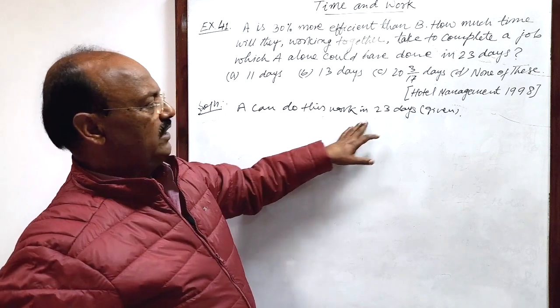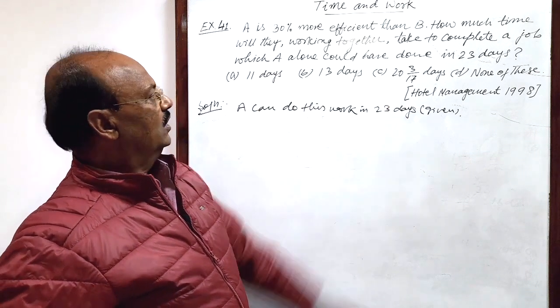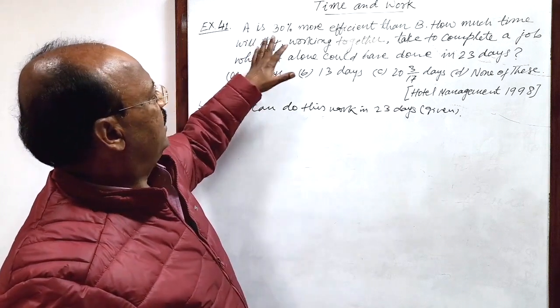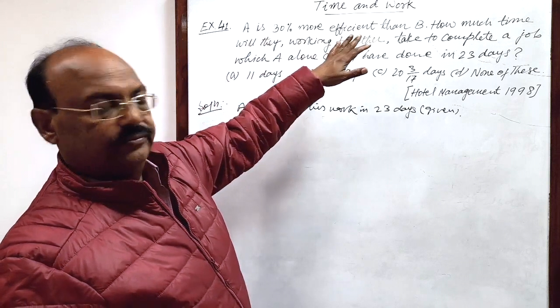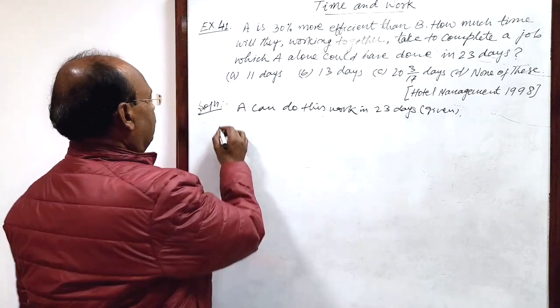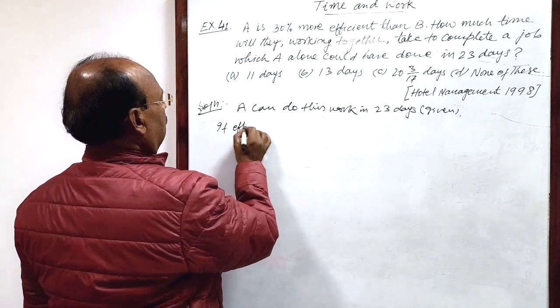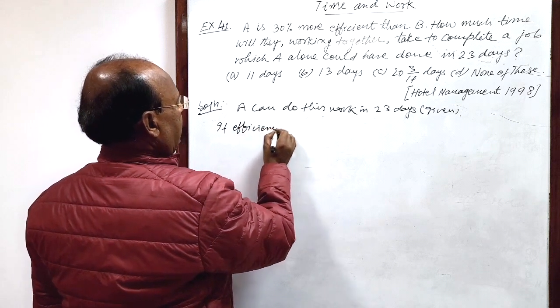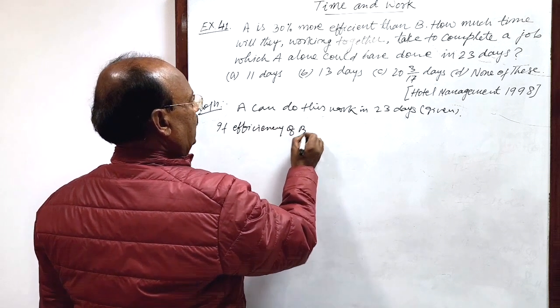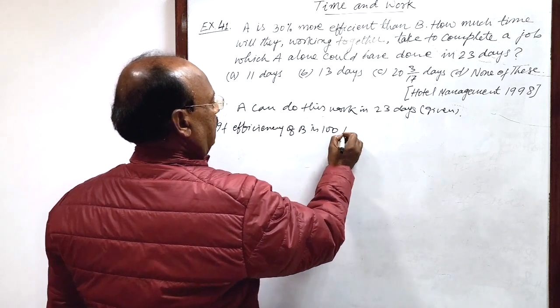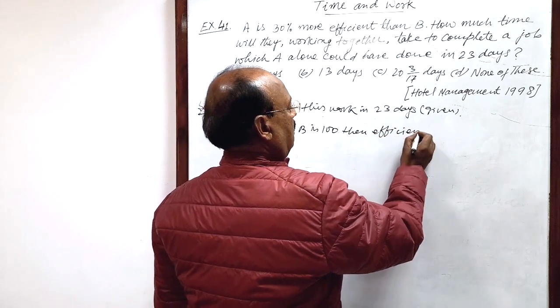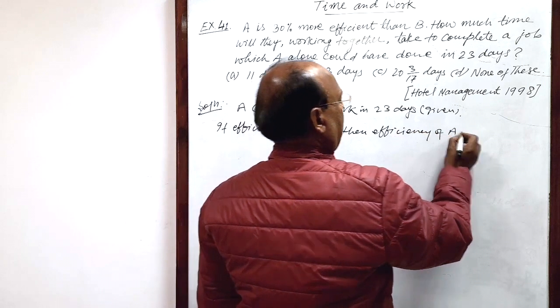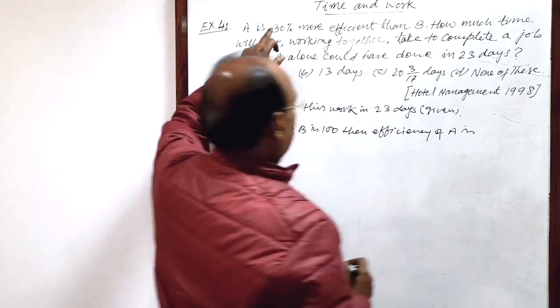So A can do this work in 23 days. And here efficiency ratio is given. A is 30% more efficient. So if efficiency of B is 100, then efficiency of A is 30% more.